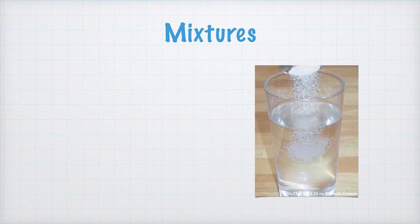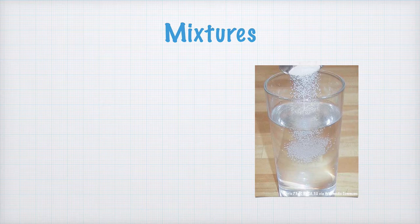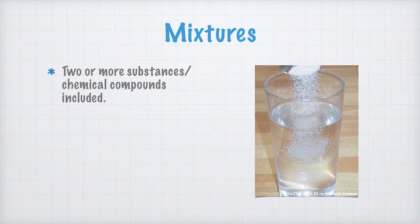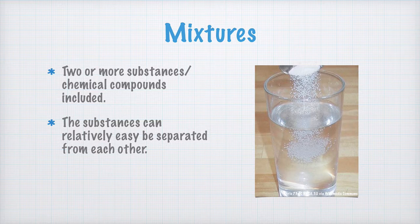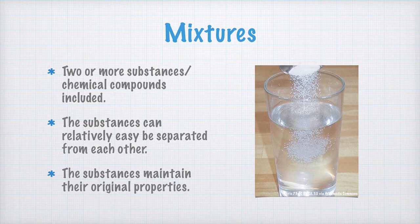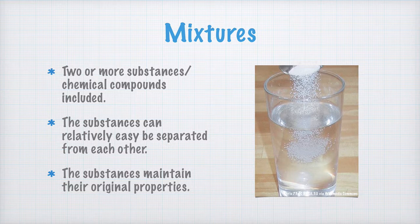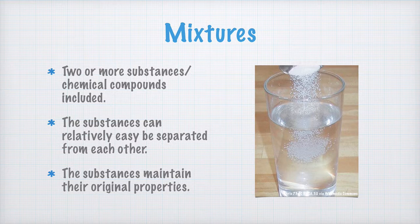A mixture is not the same thing as a chemical compound. What signifies a mixture is first that it consists of two or more substances. And second, that the substances are relatively easy to separate from each other. And as we noted before, in a mixture, the substances in the mixture maintain their original properties. In the mixture of iron and sulfur that I showed earlier, the iron was still magnetic. And if we dissolve some sugar in water, the water will, for example, still taste sweet.